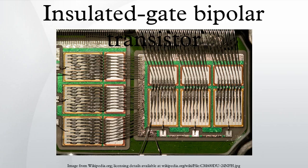The insulated gate bipolar transistor is a three-terminal power semiconductor device primarily used as an electronic switch which, as it was developed, came to combine high efficiency and fast switching. It switches electric power in many modern appliances: variable frequency drives, electric cars, trains, variable speed refrigerators, lamp ballasts, air conditioners, and even stereo systems with switching amplifiers. Since it is designed to turn on and off rapidly, amplifiers that use it often synthesize complex waveforms with pulse width modulation and low pass filters.